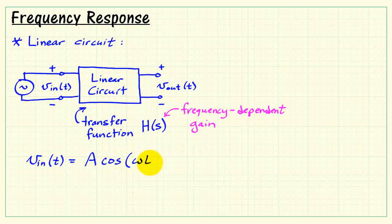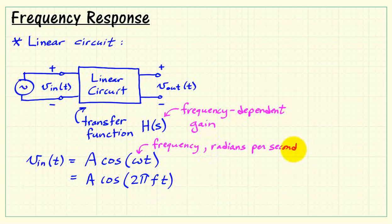Now if we apply specifically a sinusoidal signal to this linear circuit, I'll call that A cosine of omega t, A being the amplitude of the sinusoid, and omega being the frequency in radians per second. We can also write omega as 2π times f, where f is our frequency in hertz, or cycles per second.